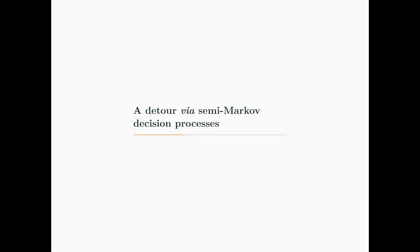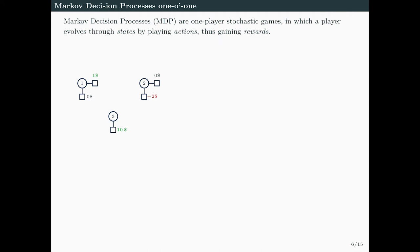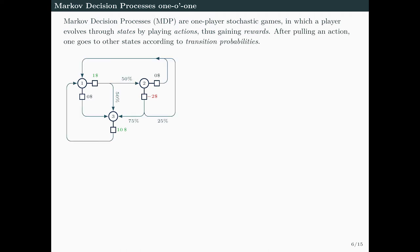Let us do a quick detour via semi-Markov decision processes. Markov decision processes, or MDPs, are a famous class of one-player stochastic games in which a player evolves through states by playing actions and gaining rewards. Here is a small example where you have 3 states. From states 1 and 2 you can play 2 actions, and from state 3 you can only play 1 action. To earn as much money as possible, from state 1 you want to pull the $1 action, and from state 2 the $0 action. After pulling an action, you go to other states according to transition probabilities.